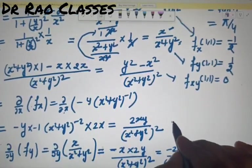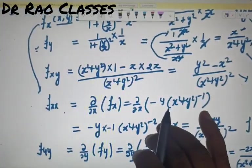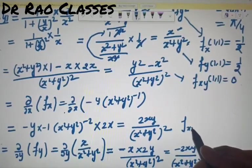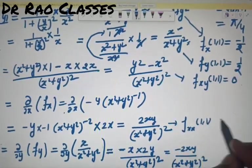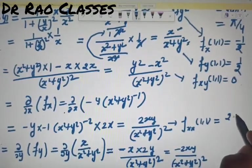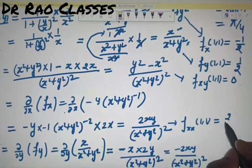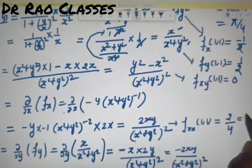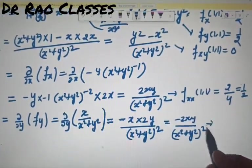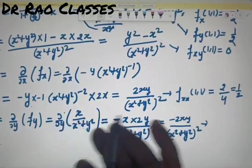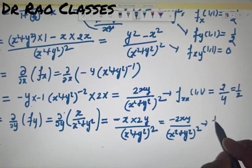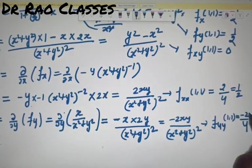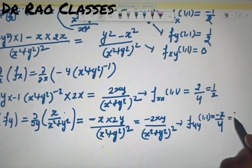f_xx(1,1): 2xy/(x²+y²)² = 2×1×1/(1+1)² = 2/4 = 1/2। f_yy(1,1): -2xy/(x²+y²)² = -2/4 = -1/2। तो summary: f(1,1)=π/4, f_x(1,1)=-1/2, f_y(1,1)=1/2, f_xx(1,1)=1/2, f_xy(1,1)=0, f_yy(1,1)=-1/2।